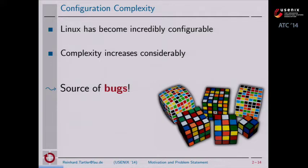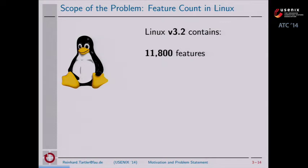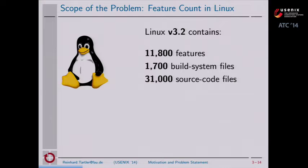To give you an idea about the scope of the problem: in Linux 3.2, we're talking about 11,800 configuration options that the user can enable or disable in the configuration tool kconfig. These configuration options control the compilation of about 1,700 build system files, mostly makefiles, that control the compilation of about 31,000 source code files in which we find no less than 89,000 ifdef blocks.